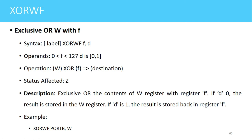The next instruction is XORWF. Using this instruction we can perform the XOR operation of the value present in the working register and the value present in the file register. The syntax is XORWF F, D, where F is a file register and D is the destination bit. An example is XORWF PORTB, W — the value in PORTB will be XORed with the value in the working register and the result stored in the working register since the destination bit is W.